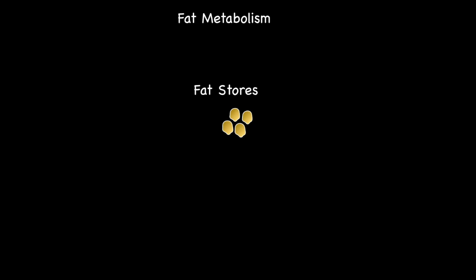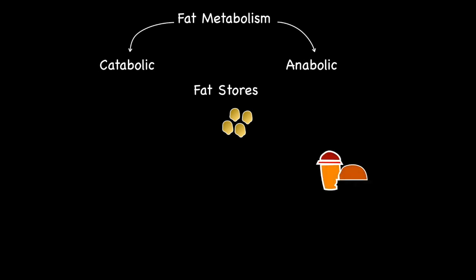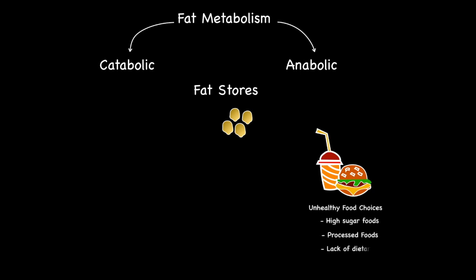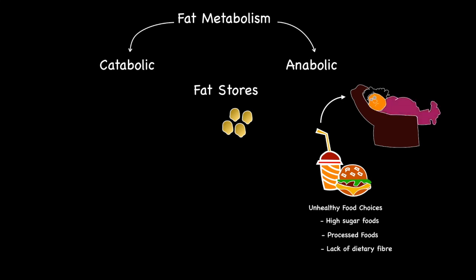Now, fat metabolism can be divided into two main categories: catabolic and anabolic. When someone consumes an excess amount of refined carbohydrates, processed foods, and has a lack of dietary fiber from the food that they consume, this can contribute to a variety of preventable health issues. In addition, following a sedentary lifestyle comprising of hours in front of a screen increases the likelihood that they will put on weight.